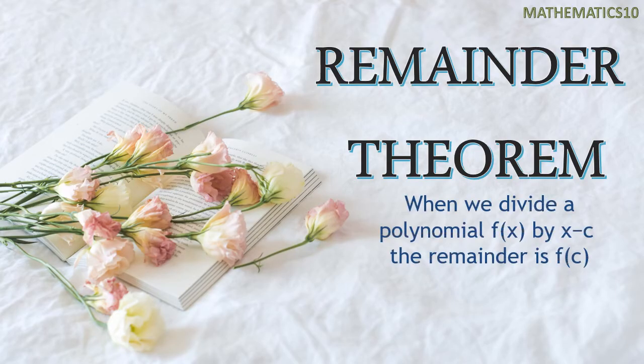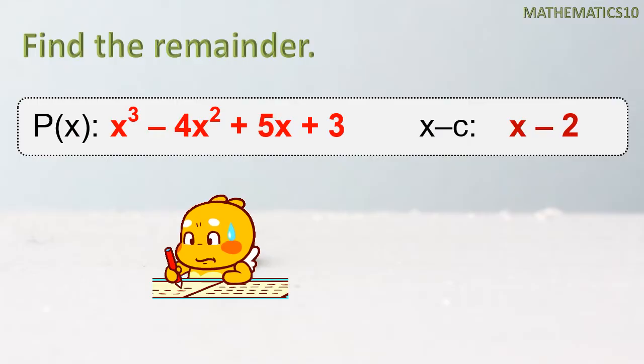Remainder theorem states that when we divide a polynomial f of x by x minus c, the remainder is f of c. So how are we going to apply this? Here our first example is P of x, x³ minus 4x² plus 5x plus 3, and our divisor x minus c is x minus 2.